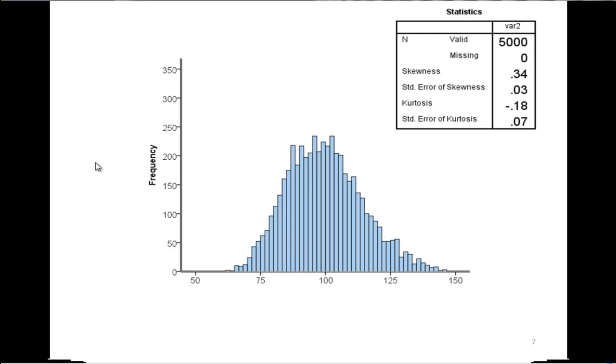I would find that skew in this case is equal to 0.34 and kurtosis negative 0.18. When I do a z-test on this, I find that the z is actually statistically significant. It's suggesting that there's a statistically significant amount of skew associated with this distribution because the z-value is equal to 11.33. Kurtosis is also statistically significant at negative 2.56.